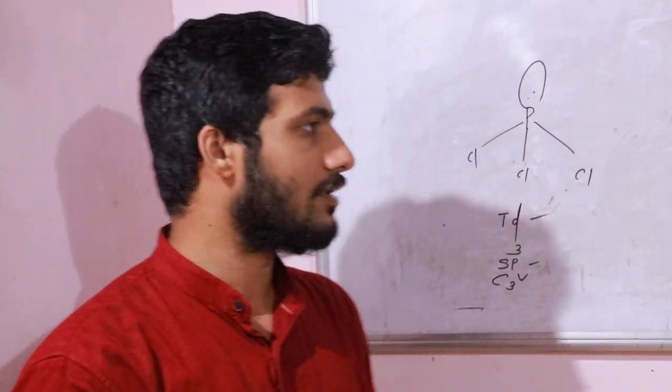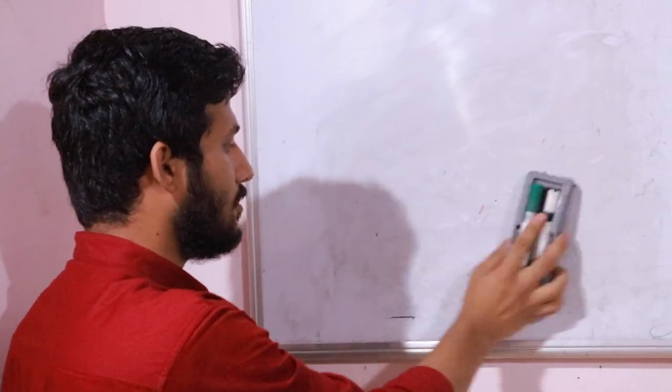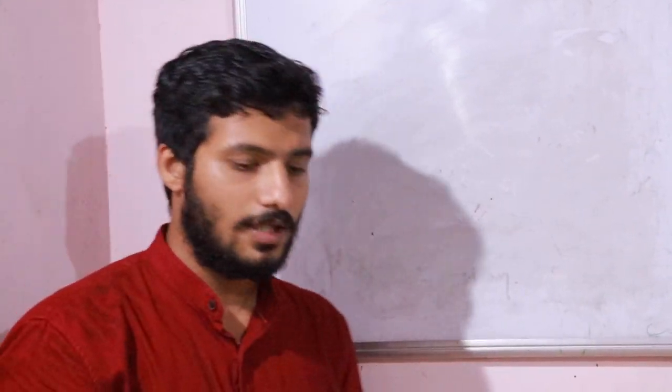In conclusion, phosphorus trichloride is less reactive than phosphorus pentachloride. The reason is that in phosphorus pentachloride, two axial bonds are present, whereas in phosphorus trichloride there are no axial bonds. Therefore, the pentachloride molecule is more reactive when compared with the phosphorus trichloride molecule.